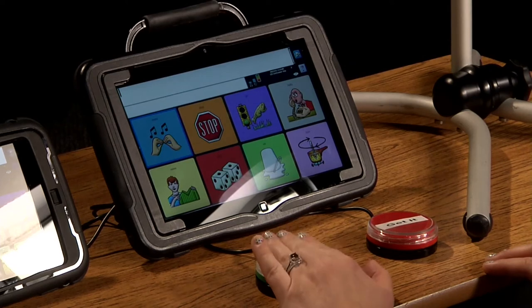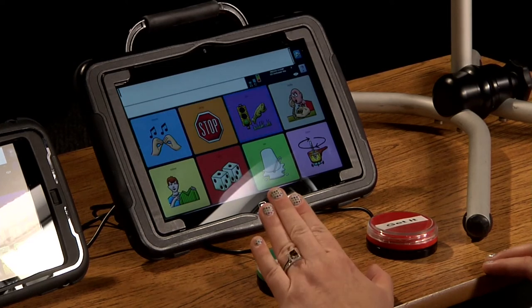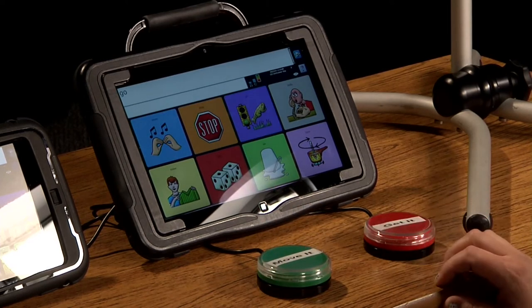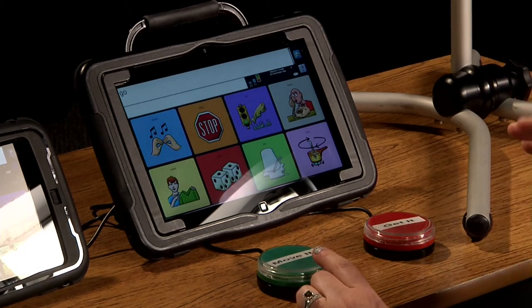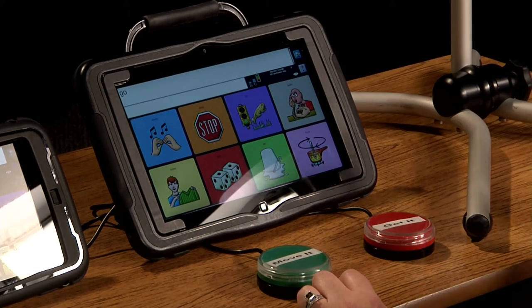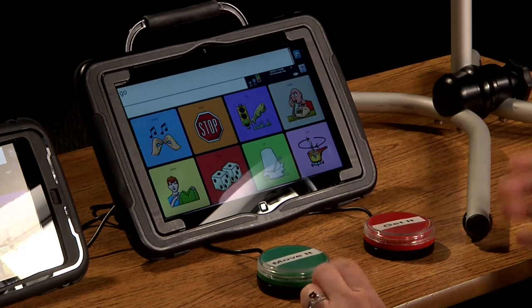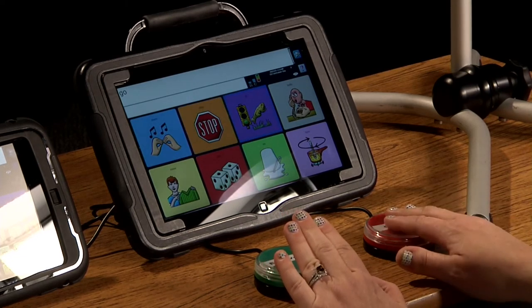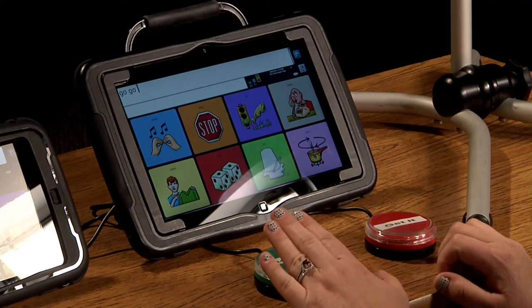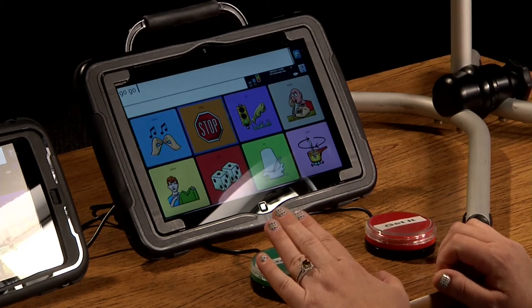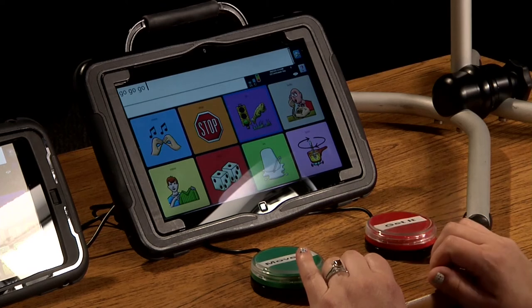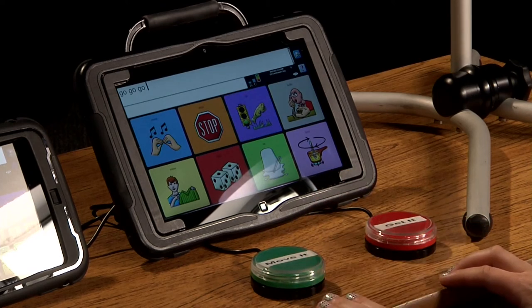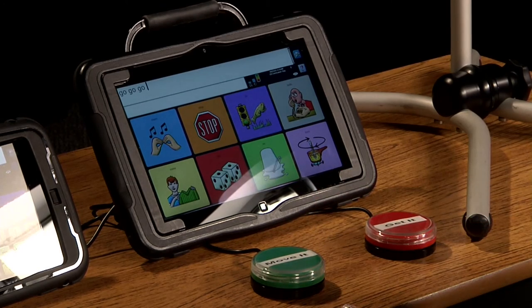I have a move it switch and a get it switch. So you can hear the auditory prompt voice sounds a little robotic and the actual voice output sounds more natural. I'll do it one more time. Notice how I hit the move it switch three times and then I select the get it switch one time.